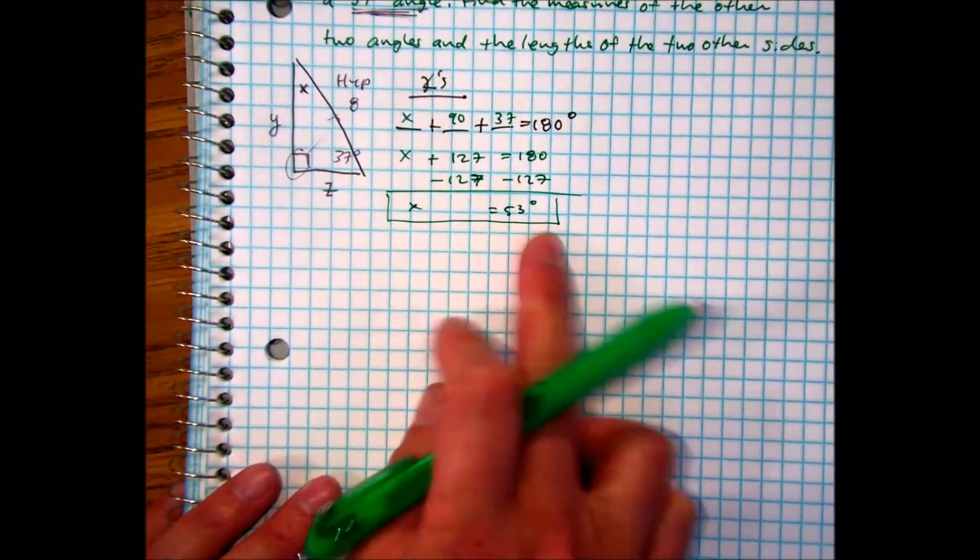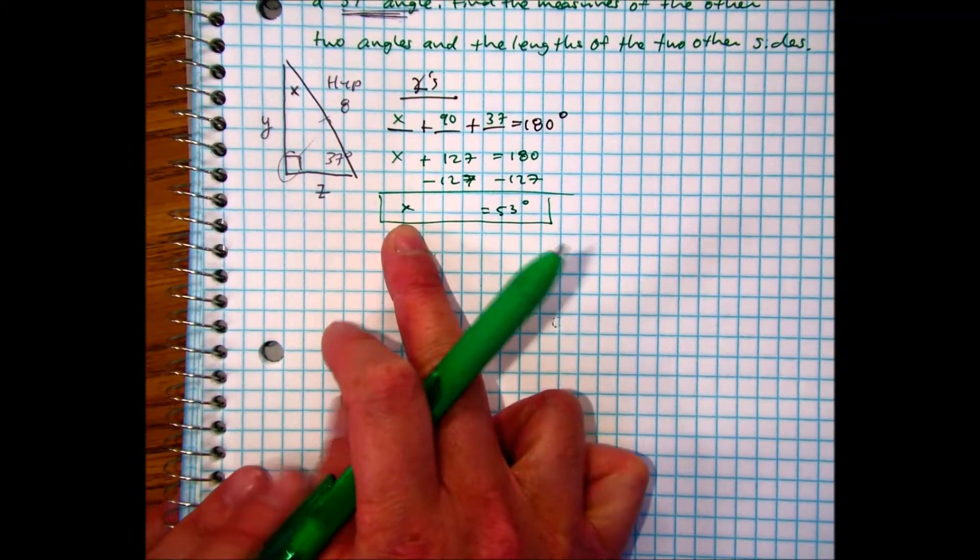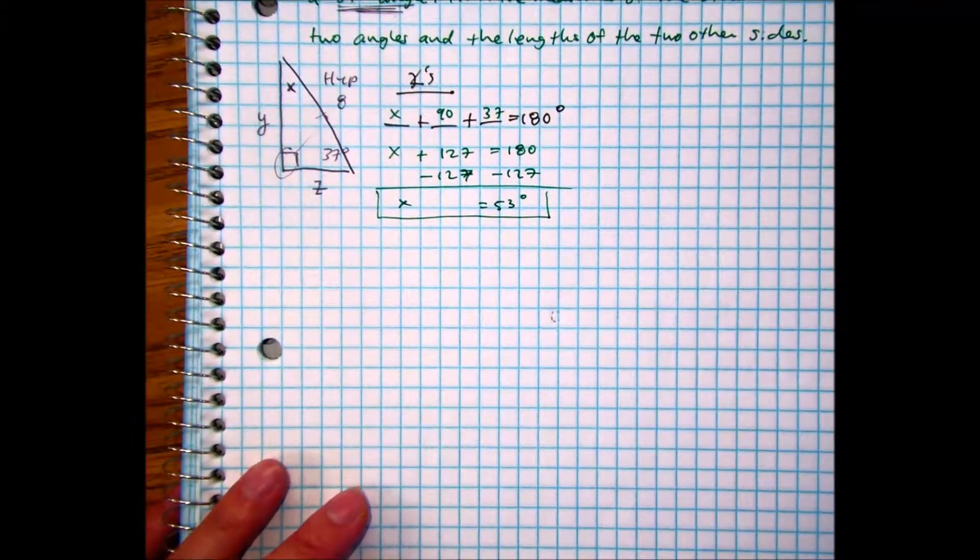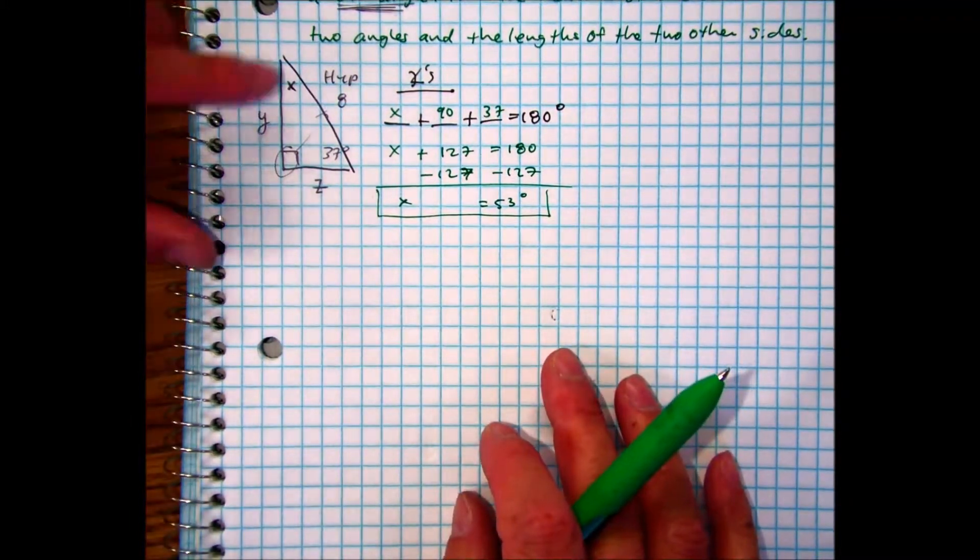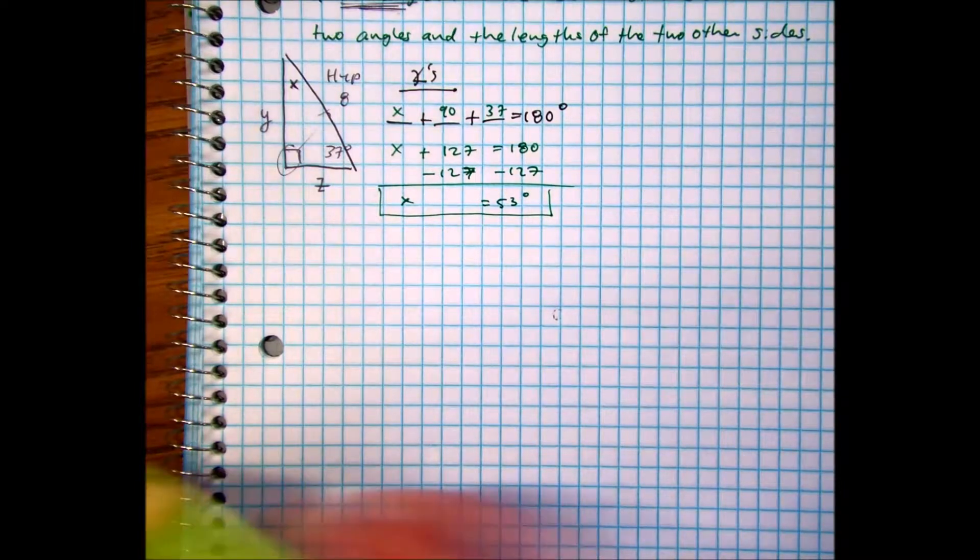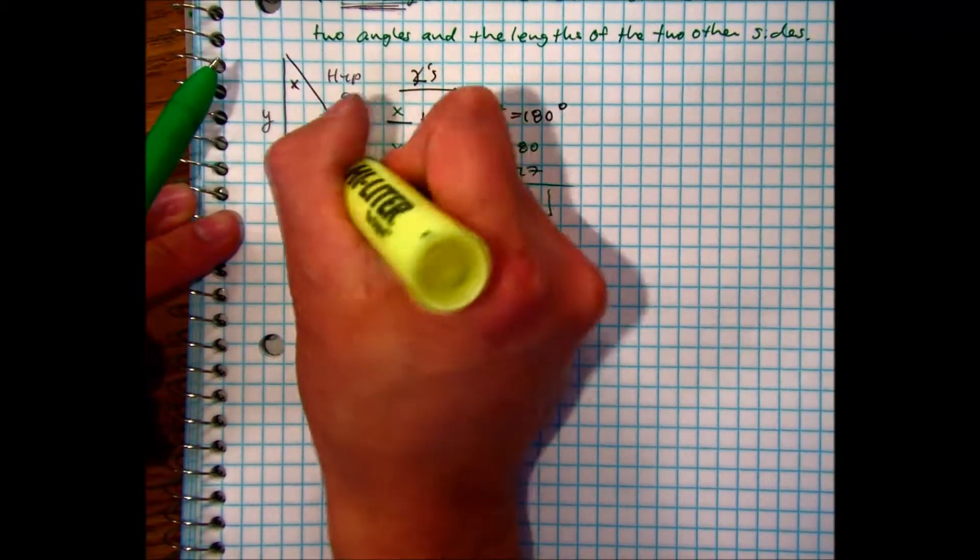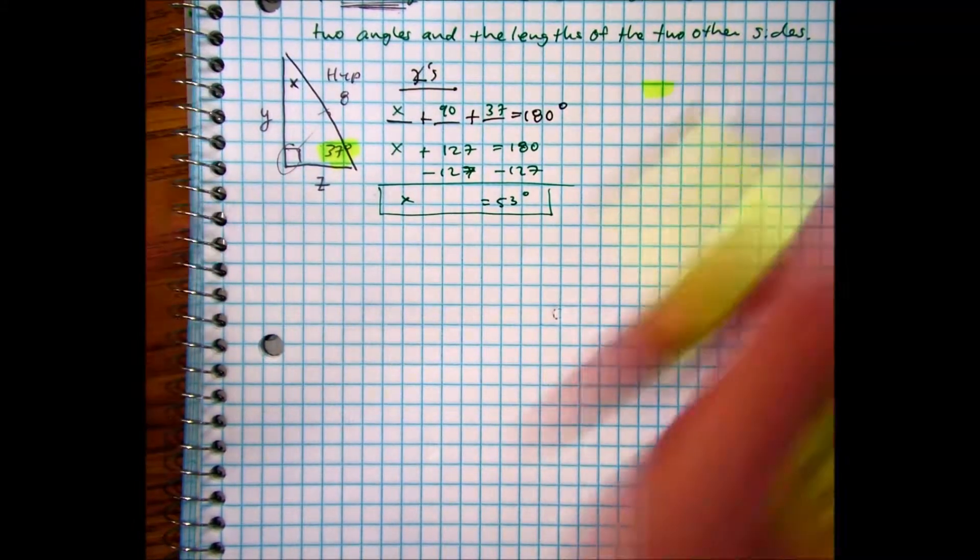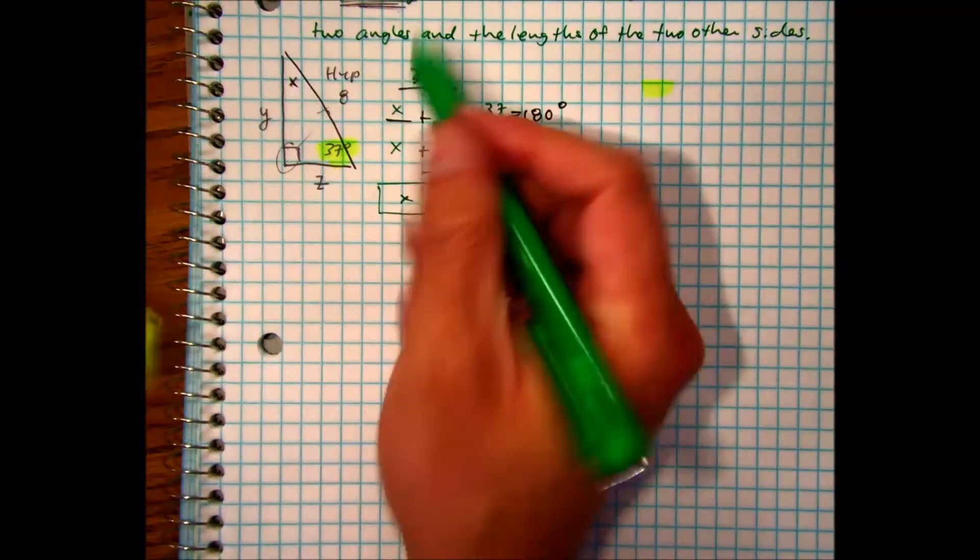Now after today's lesson, you can actually find x, the angle, in a different way as well. Let's go ahead and solve for a side here. If I start with 37 degrees, I can label my sides.